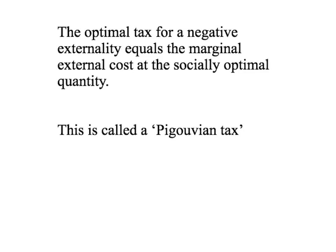So just to summarise: the optimal tax for a negative externality equals the marginal external cost at the socially optimal quantity. If that tax is put in place, the market itself will choose to produce and consume the socially optimal level of output. That's the Pigouvian tax, and that is a government response to solve the market failure of negative externalities such as pollution. Talk to you next time.